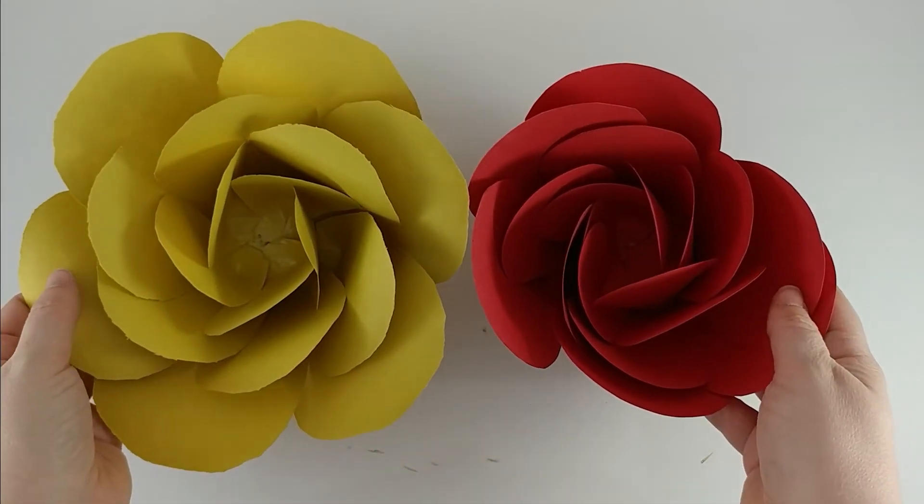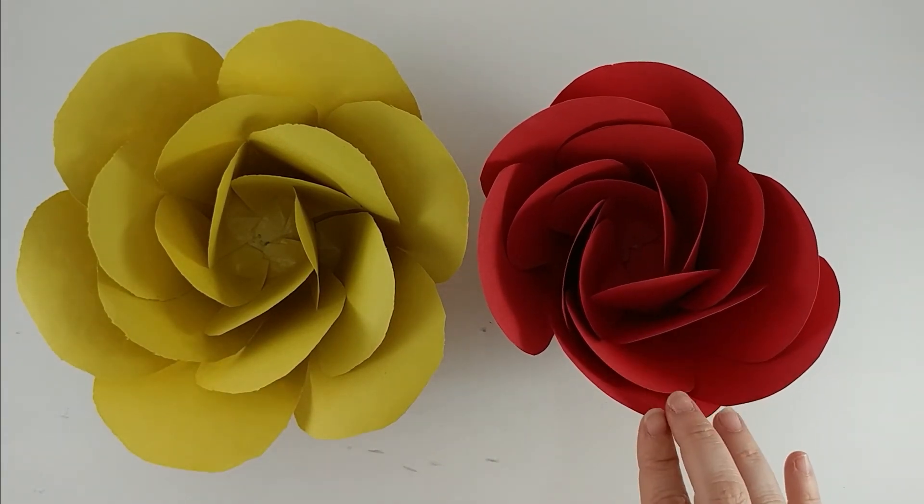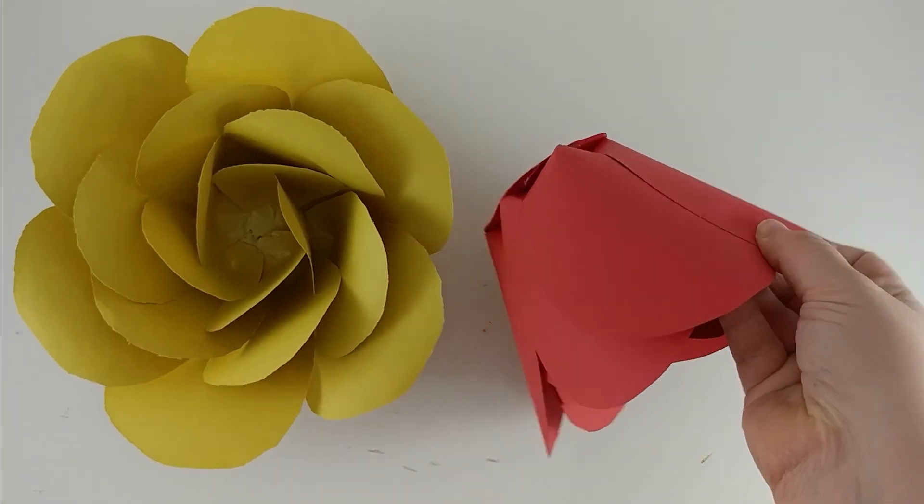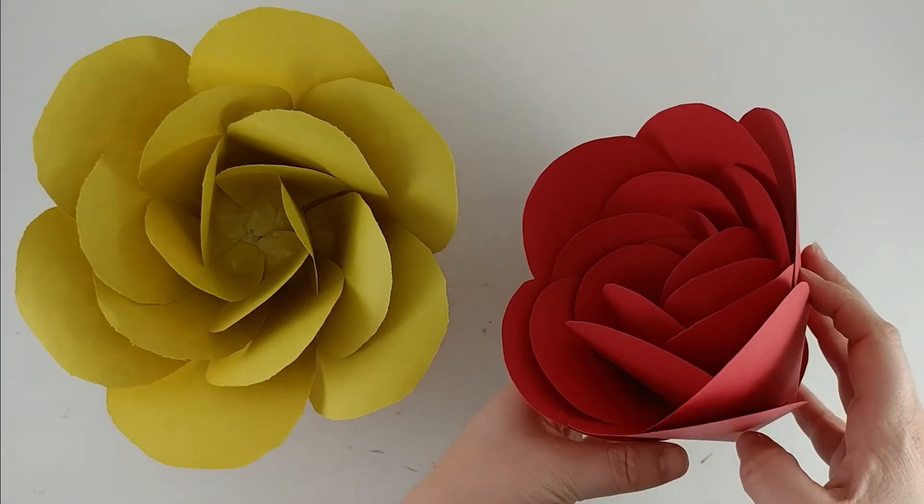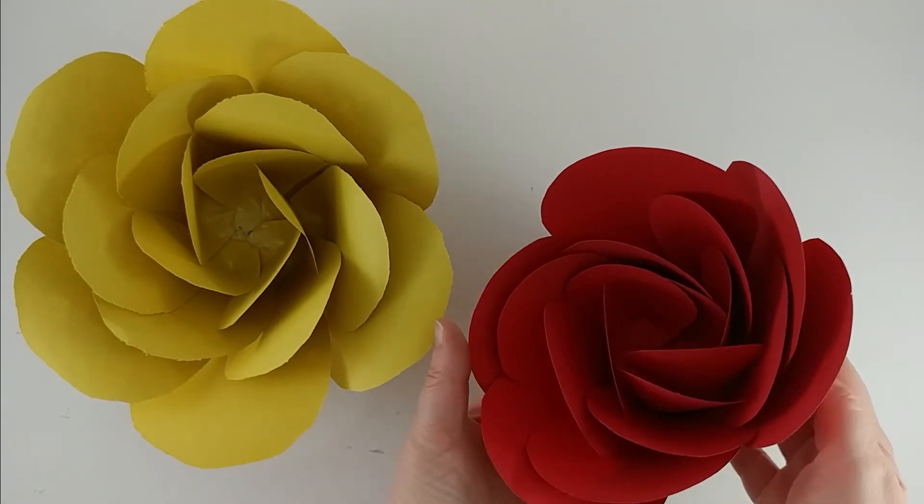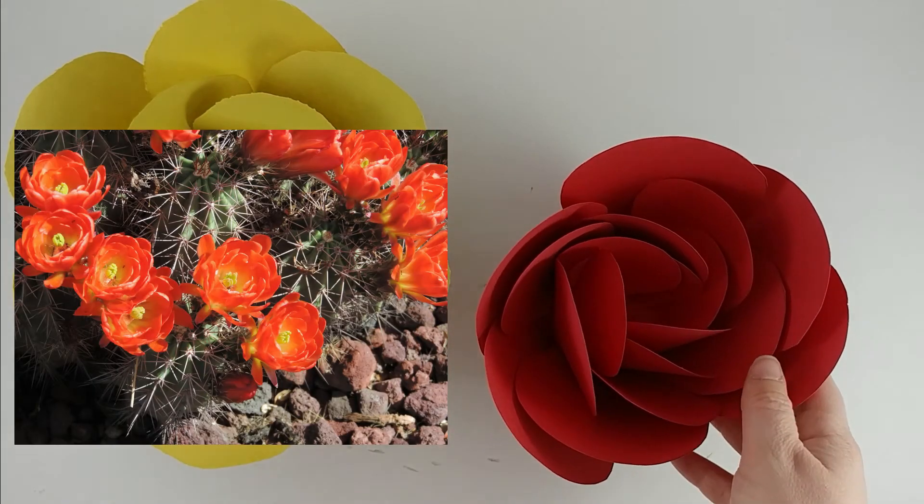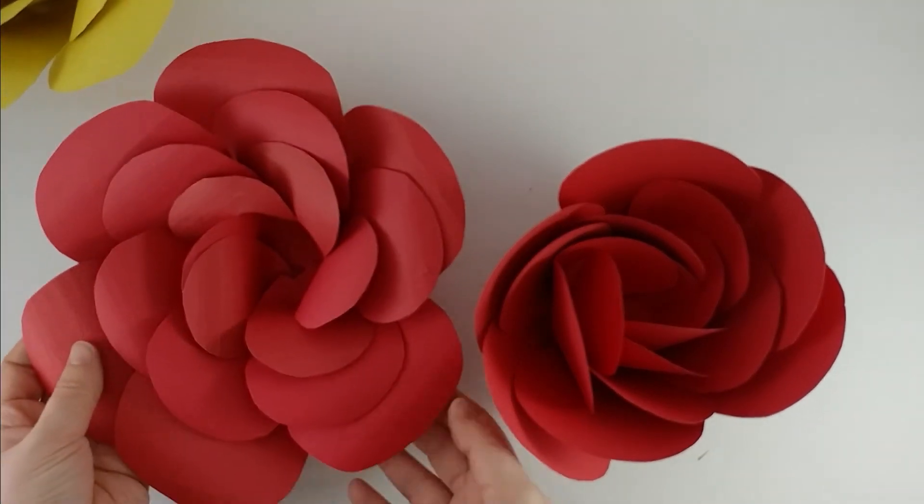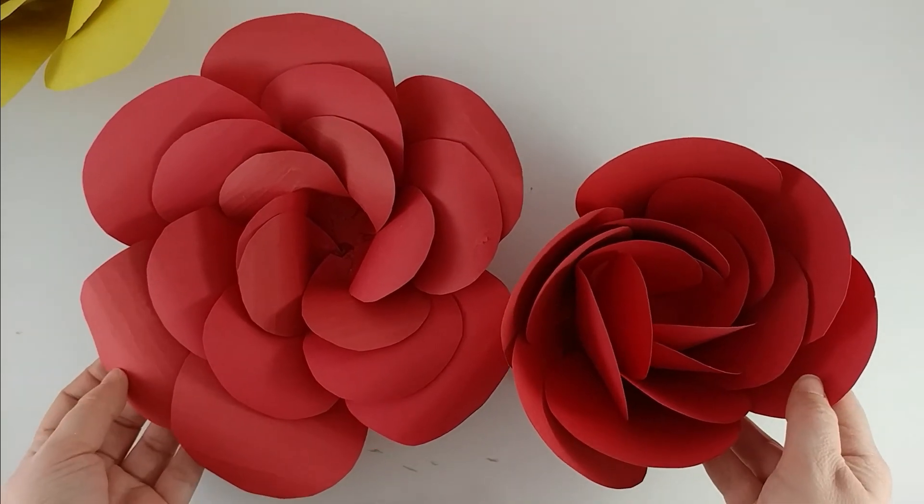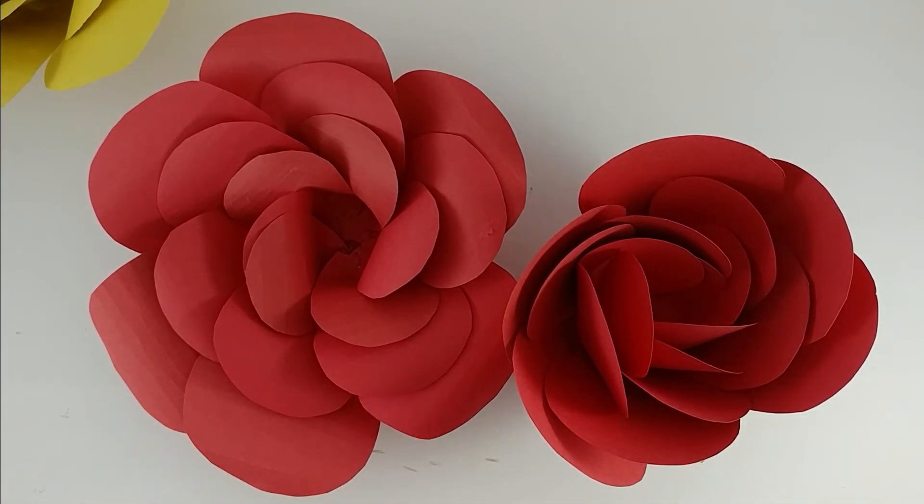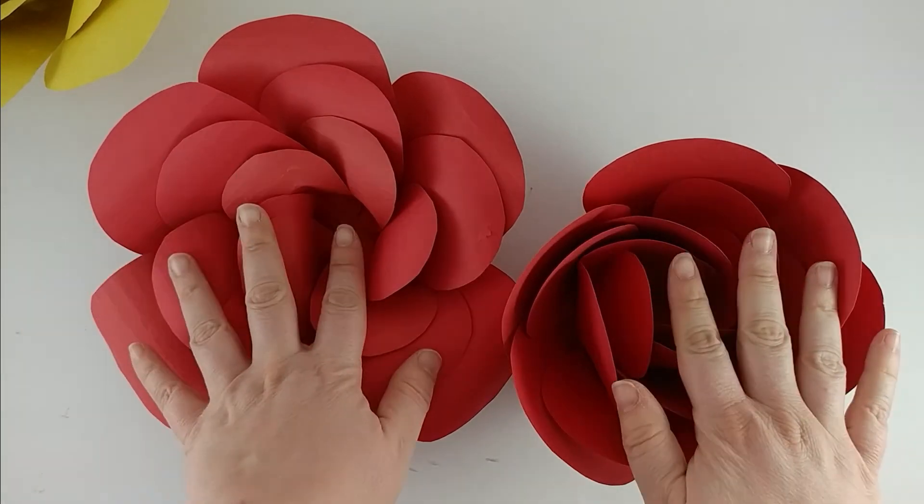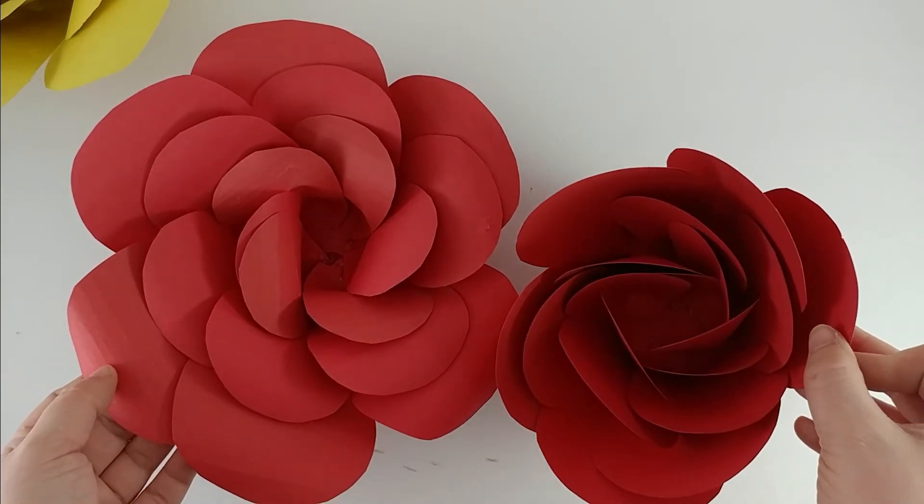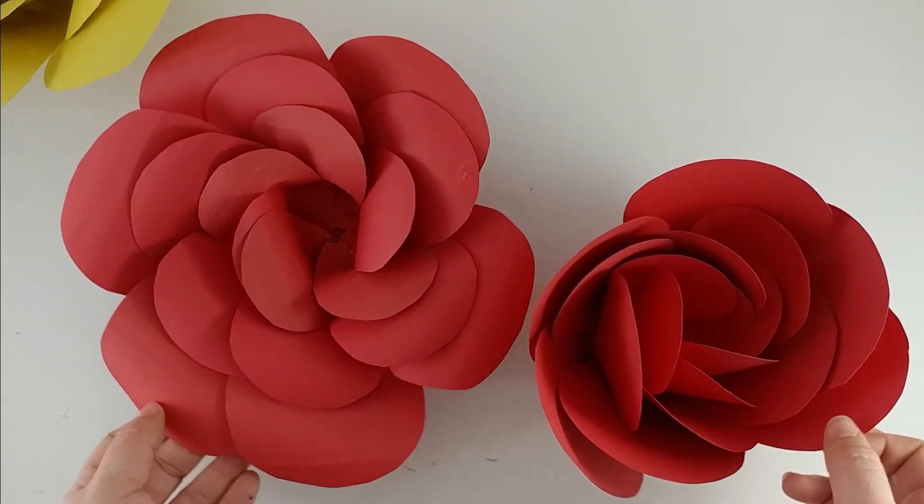I do recommend curling your petals because this one I made using cardstock and hot glue but I made it without any curl whatsoever just to see what it looks like. It kind of reminds me of a cactus flower, but it looks nothing like the rose petals that I got using the exact same paper, the exact same glue, the exact same method. You can see what a difference it makes just curling the petals before you attempt to tape them on.